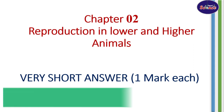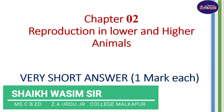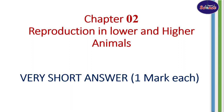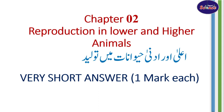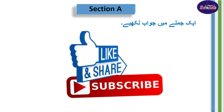آج کے اس lecture میں ہم chapter number two پر پوچھے گئے question bank میں very short answer کے بارے میں discuss کریں گے اور ان کا کیا solution ہے یا کس طرح سے ان کے جوابات لکھنے چاہییں اس کے بارے میں معلومات حاصل کریں گے۔ اس chapter کا نام ہے reproduction in lower and higher animals۔ یہ section A کا حصہ ہے جس میں ایک جملے میں جواب لکھیے اس طرح سے سوالات پوچھے جاتے ہیں۔